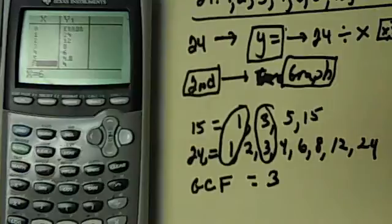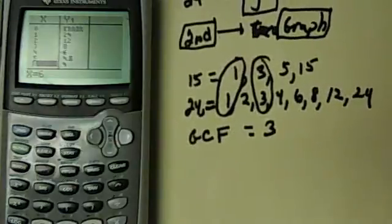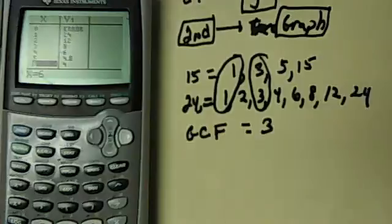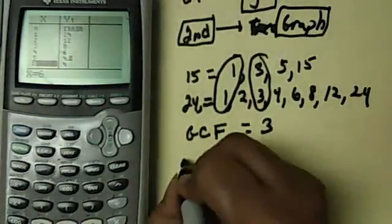Again, we have a calculator, so we don't want to do this by hand. We don't want to list these in a circle because we could have bigger numbers. So to find the GCF in the calculator...